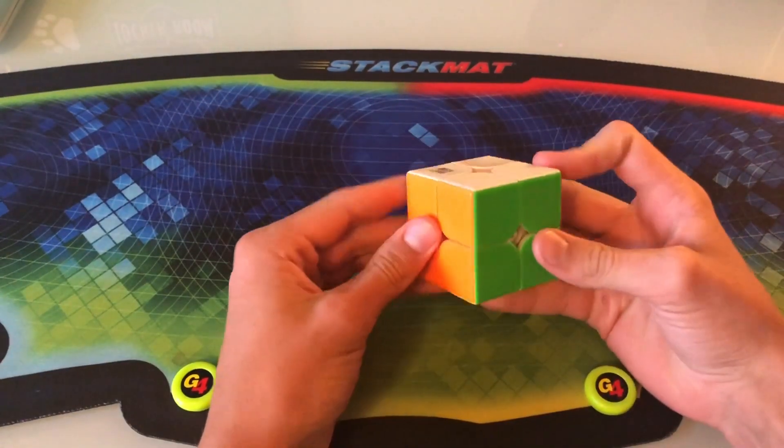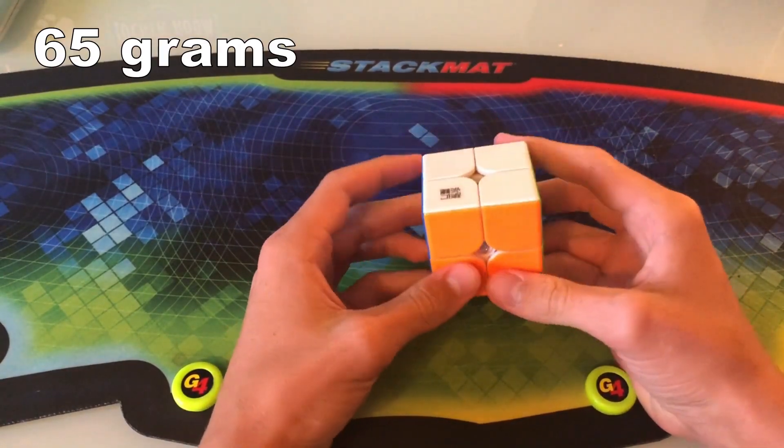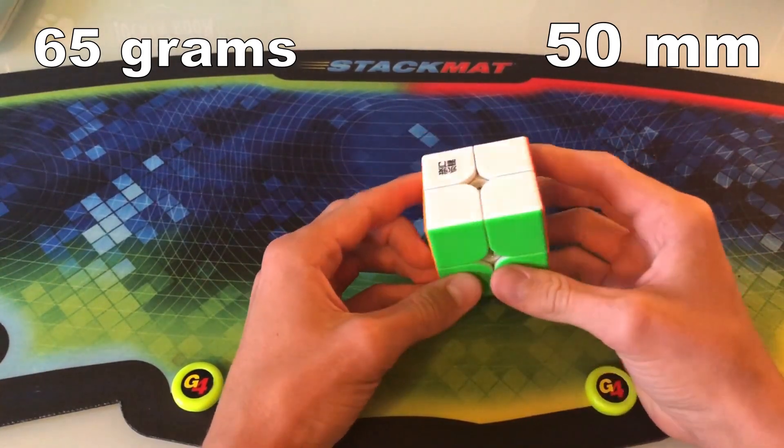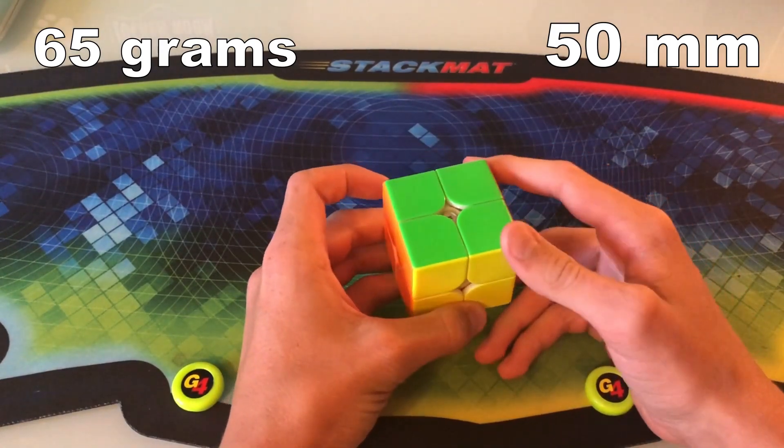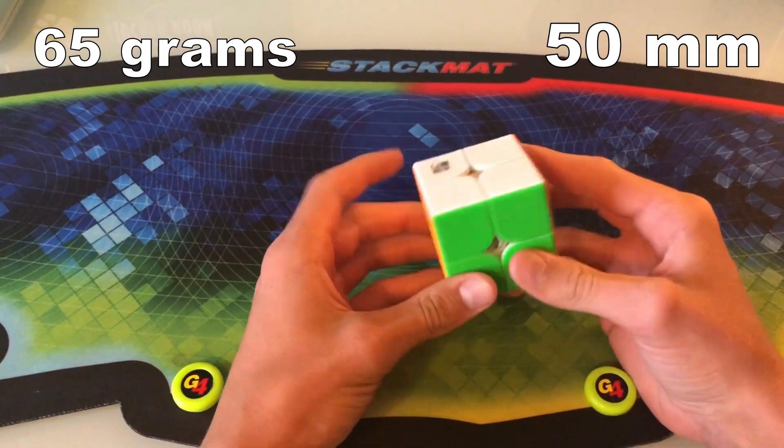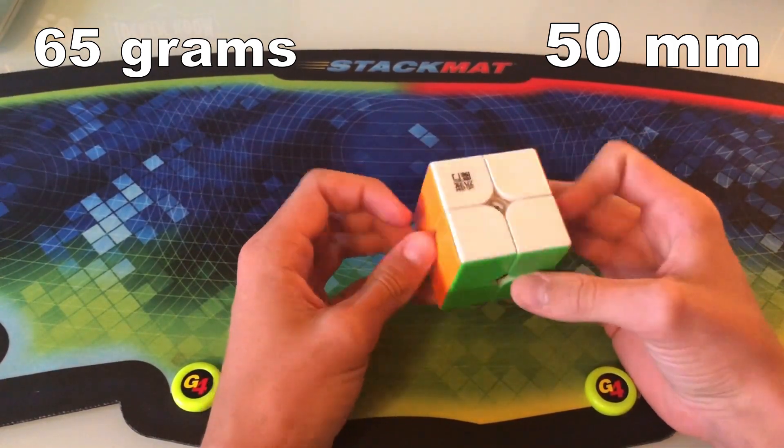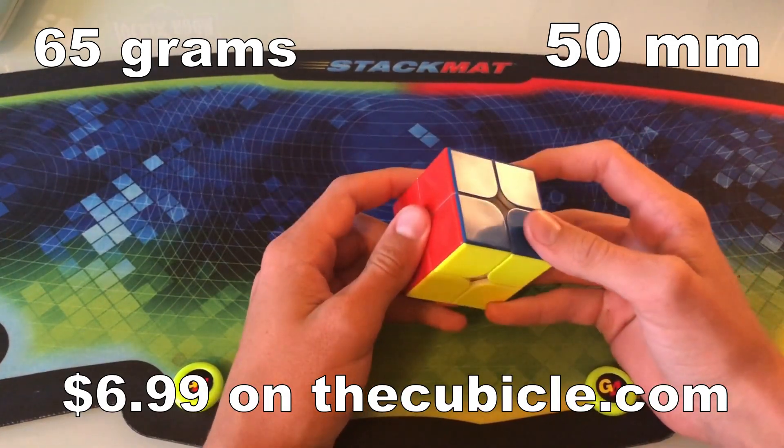We'll start with some of the specs of this cube. In total, this cube weighs 65 grams, and it is 50mm across, which is pretty standard for most 2x2s these days. Some are only 49mm, and some are 51, but in my opinion, 50 feels perfect. It's right in the pocket, it's pretty good. And right now, you can get this cube for $6.99 on thecubical.com.